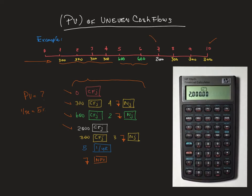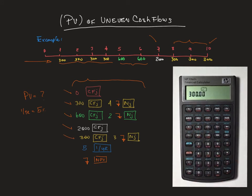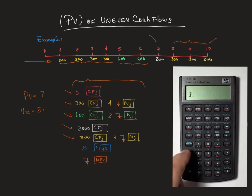Then we had the last cash flow which is 300 so it's 300 CFG because it's three years so we hit three, SHIFT and N/G.